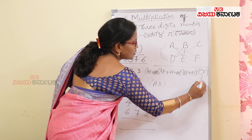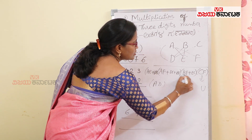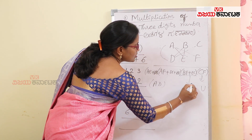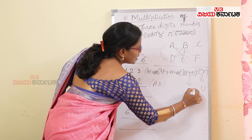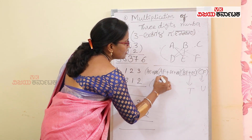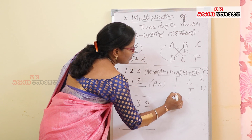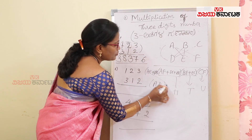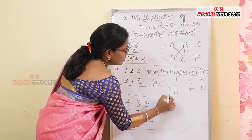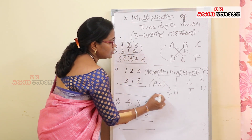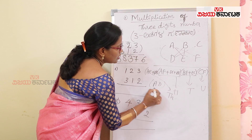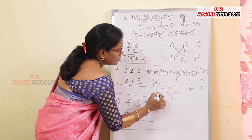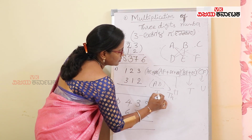This is your unit place. This is your tens place. This is your hundreds place. The pattern follows powers of 10: 10, 100, 1000, 10,000.